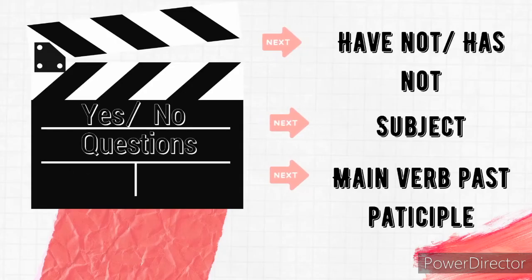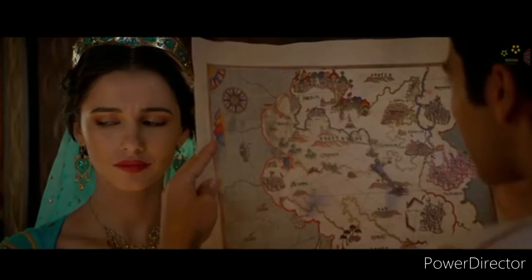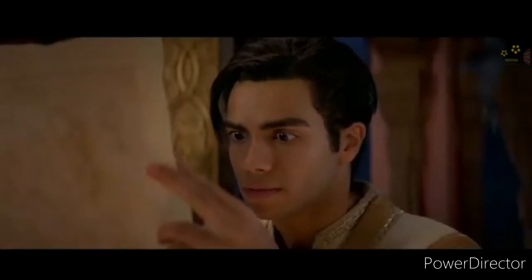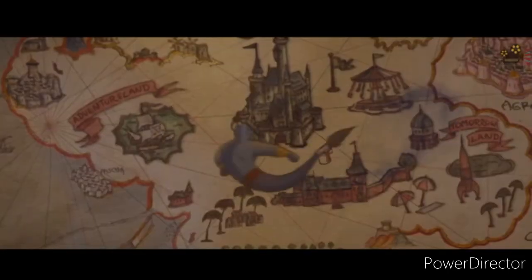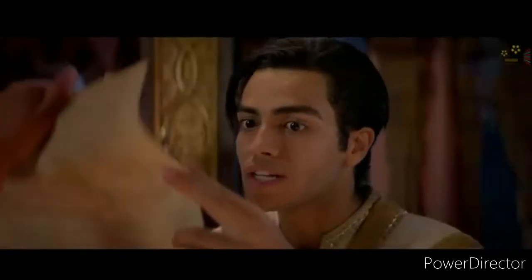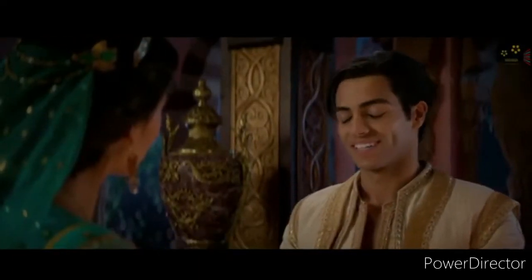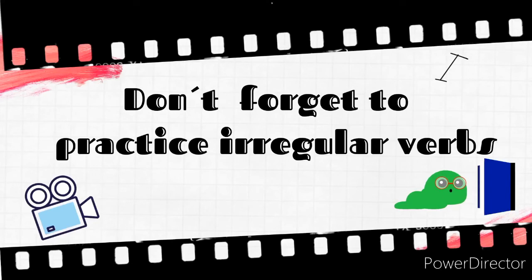For yes/no questions, it's: have or has, then the subject, then the main verb in past participle. For example: 'Have you lost your mind?' — that's a yes/no question using present perfect.